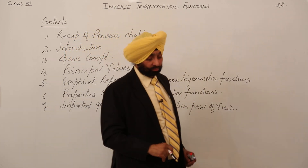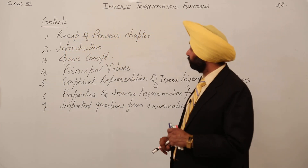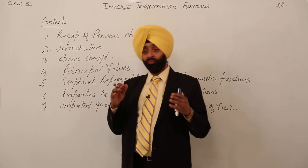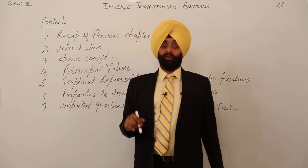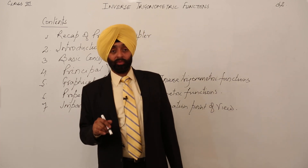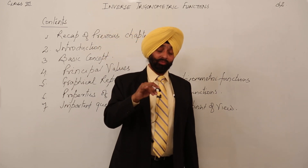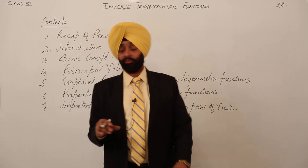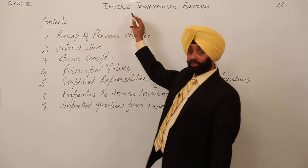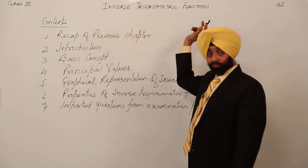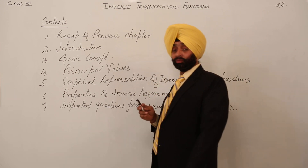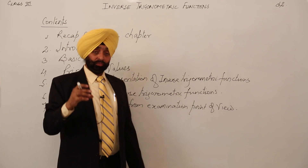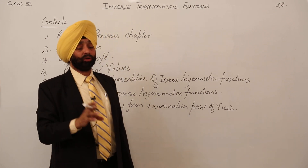Now moving to class 12th. In class 12th, what did we do? We proved that when a function is one-one, when a function is onto — when we have to find the inverse of a function, what are the conditions? For finding the inverse, the function should be one-one and onto.